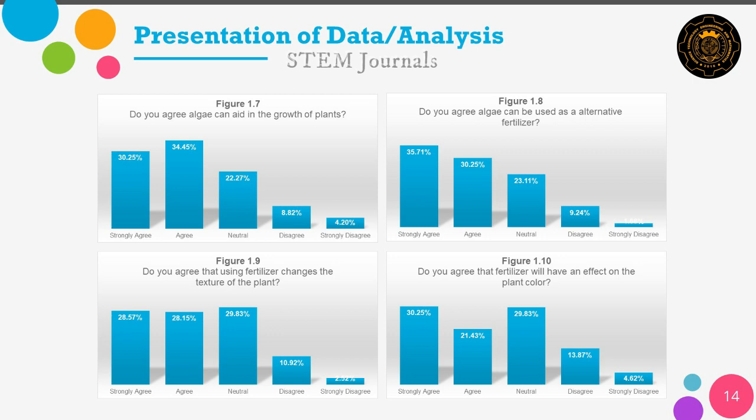For question number five, the majority voted to agree that algae can aid in the growth of plants with 34.35%, while the minority voted for strongly disagree with 4.8%. For question number six, the majority voted to strongly agree that algae can be used as an alternative fertilizer with 35.71%, while the minority voted for strongly disagree with 1.3%.